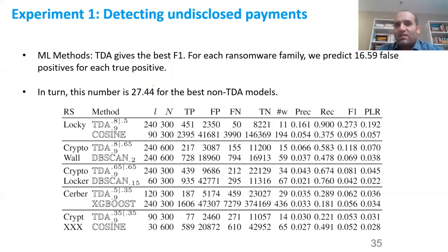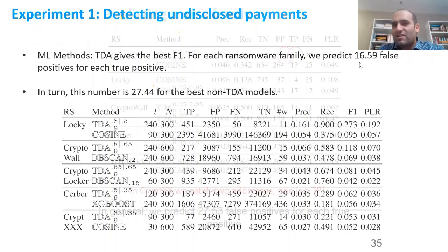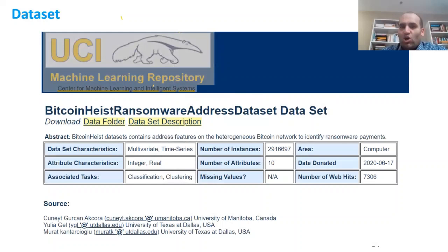We predict about 27 false positives for each true positive in the new family detection case. Previously we were predicting 16 false positives per true positive, giving the security analyst 17 addresses where one is true positive and 16 are suspicious. The ransomware dataset is online at UTI — it has time series data, network data, six features, and labels that can be used as binary ransomware or non-ransomware, or as multi-class labels with ransomware family names. I hope you can use it.